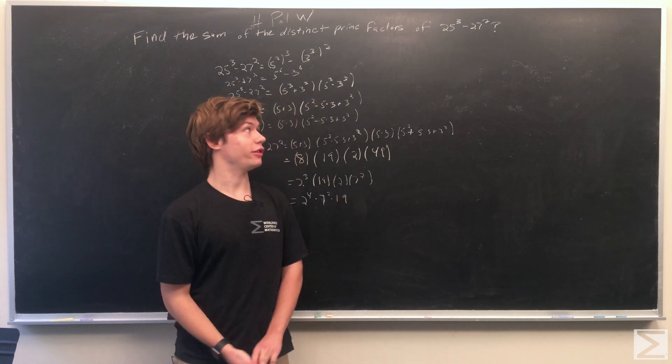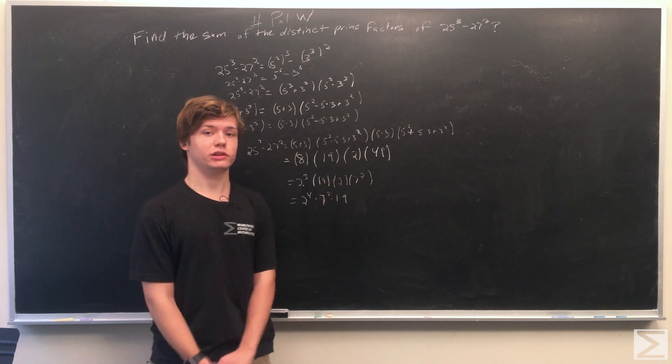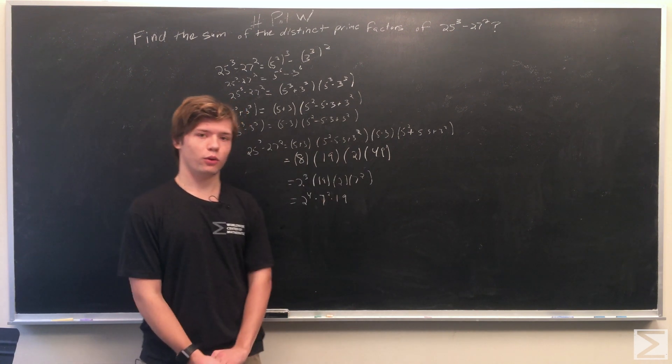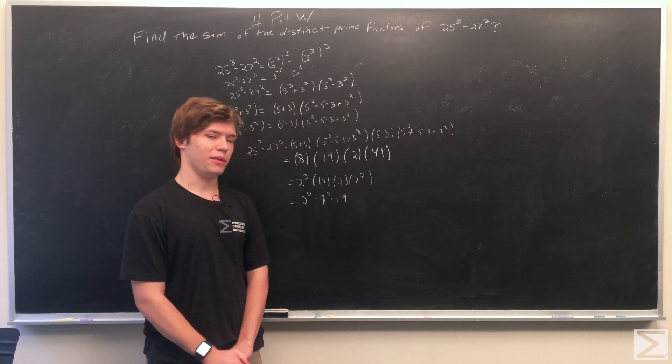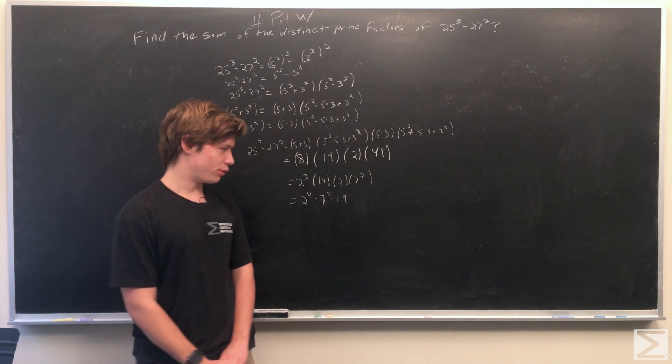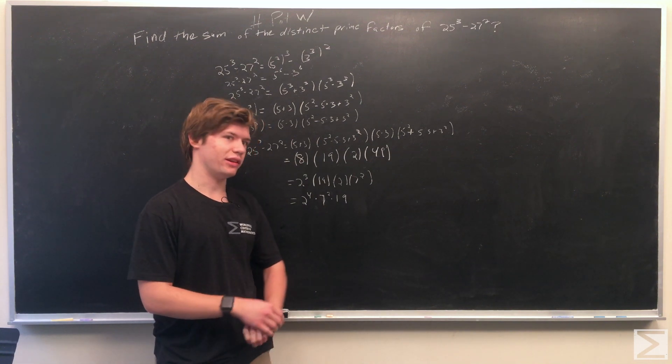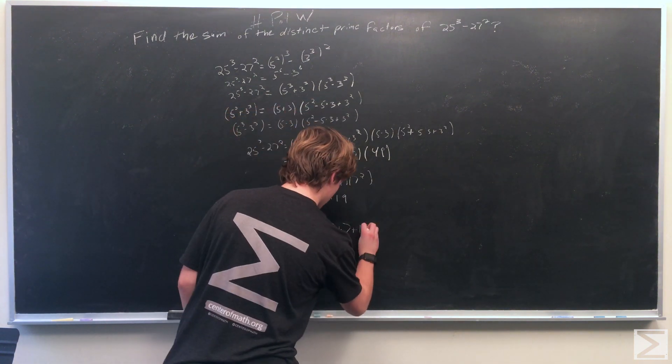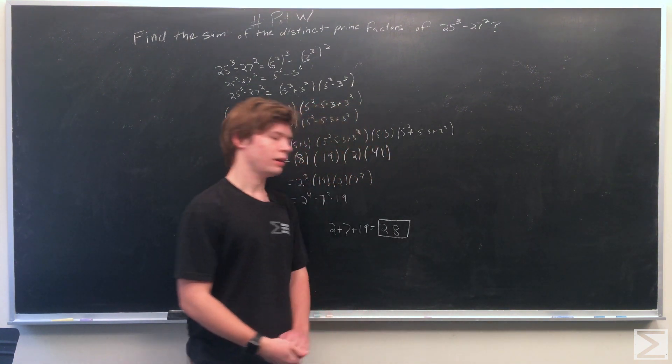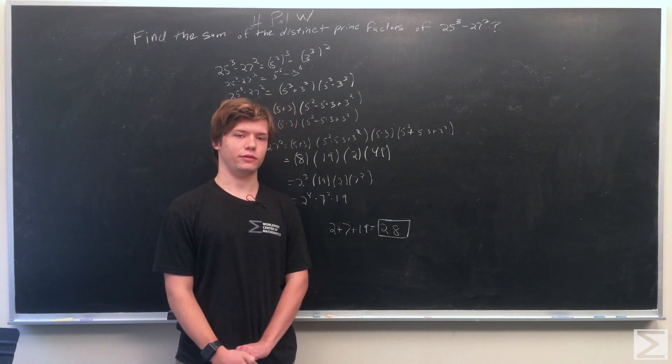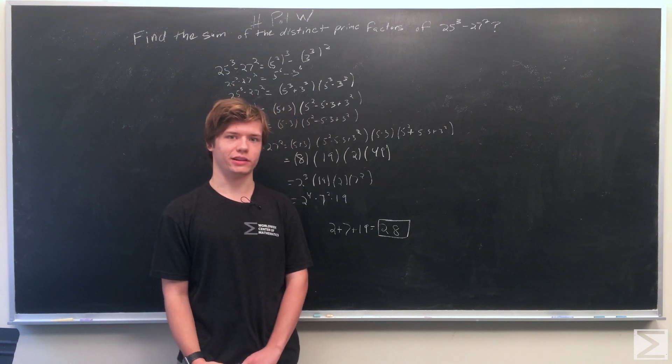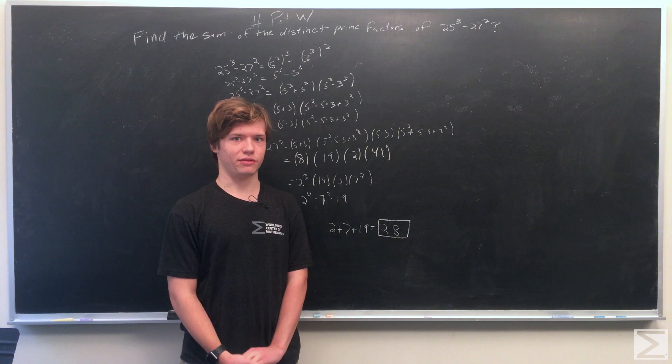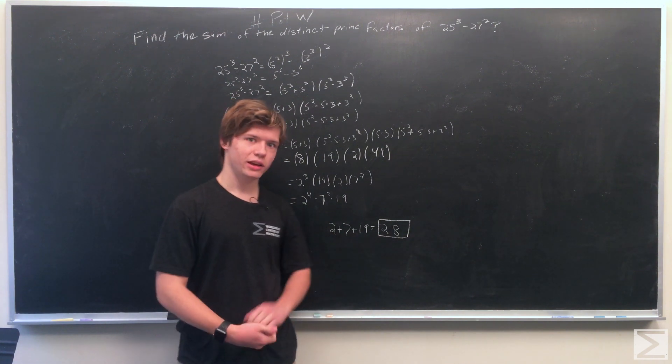So we find that the prime factorization of the initial expression is equal to 2 to the 4th times 7 squared times 19. So we have three prime factors, 2, 7, and 19. So all we have left to do is add them together. And so we see that the final sum of the distinct prime factors is equal to 2 plus 7 plus 19, which equals 28.